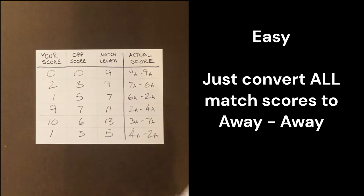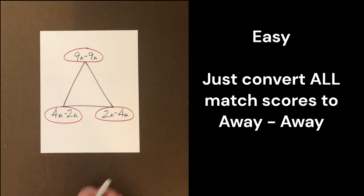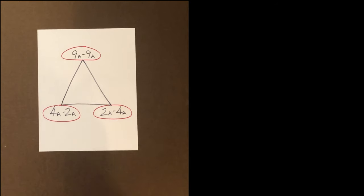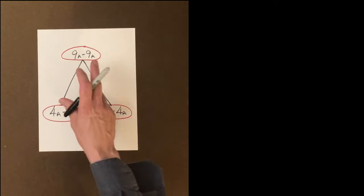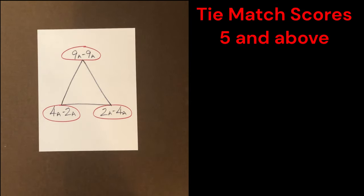Now back to our triangle. Here are the three match scores we'll be using: 9 away 9 away, 4 away 2 away, 2 away 4 away. The length of the match doesn't matter. Only our away scores. So we're using this for any match of any length.